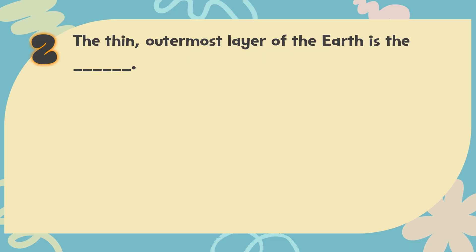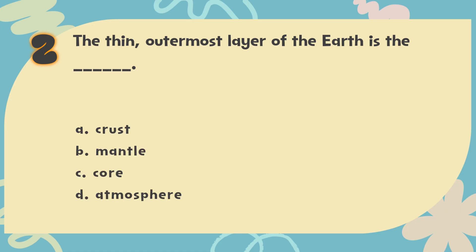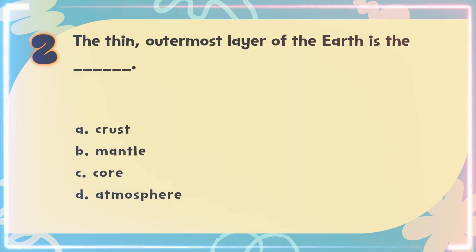Number 2: The thin, outermost layer of the earth is the blank. The choices are: A. Crust, B. Mantle, C. Core, D. Atmosphere.